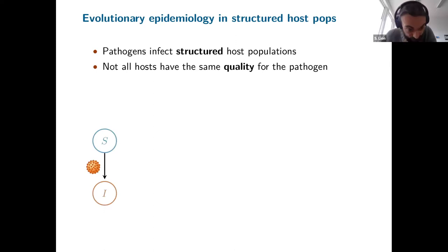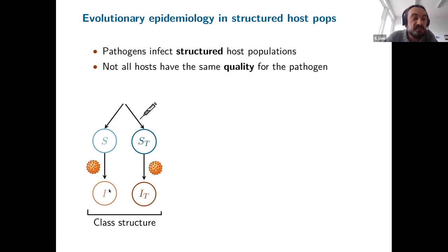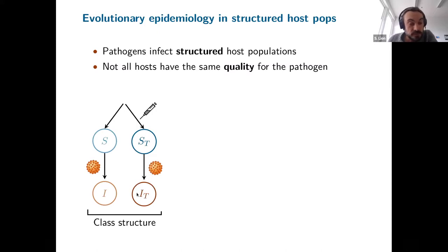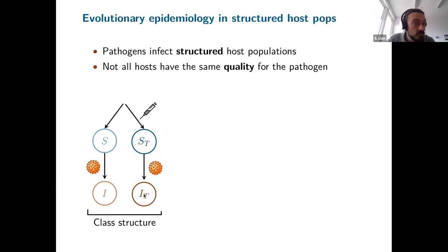One way to think about it is: you have a population of susceptible hosts (in blue) that can be infected by a virus and become infected. But you can also imagine that some hosts are treated — these are the ST hosts. The virus can also infect treated hosts if the treatment is not perfect. So we have two classes of hosts for the parasite: the non-treated host and the treated host. If the treatment is good, the treated host represents a bad habitat for the parasite, and you can expect the virus's reproductive success to be lower there.